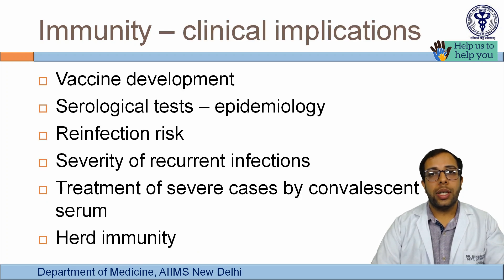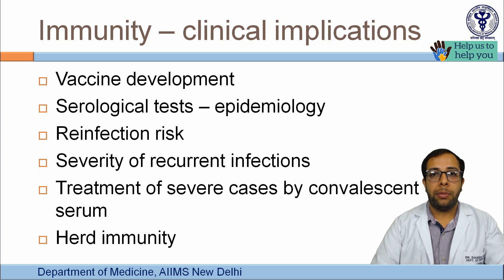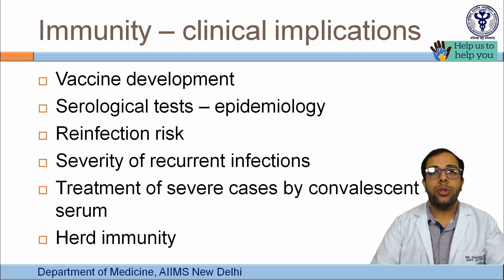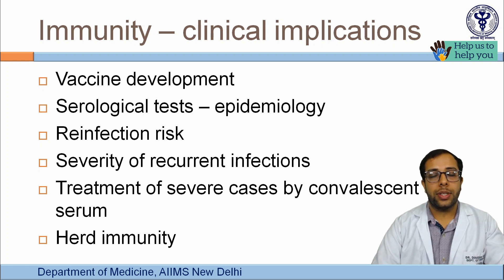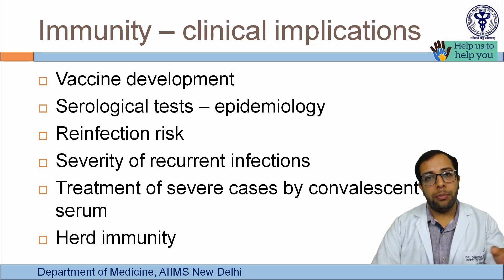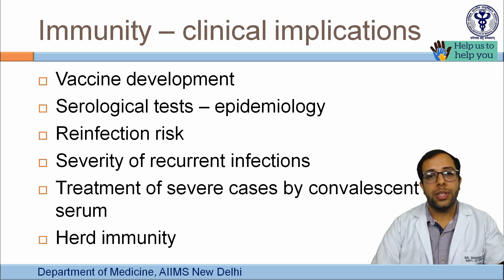The clinical implications of immunity include vaccine development: exposing a patient to an antigen generates an immune response that protects against subsequent disease, and various vaccine trials are ongoing. A second implication is serological testing, which epidemiologically identifies individuals who have or have not manifested disease. It also informs reinfection risk — the likelihood of reinfection depends on the immune response generated by the first infection and the protective nature of previously induced antibodies.